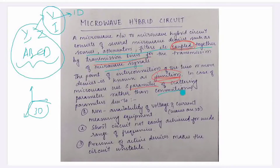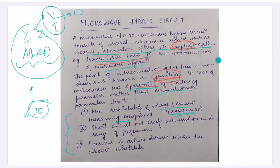So what we are doing is not using conventional parameters. Instead, we are using S-parameters, or scattering parameters. This is a famous university exam question: why do we not use conventional parameters? Because of the non-availability of voltage and current measuring equipment — waves are 3D but these sources are 1D. Also, short circuit is not easily achieved for a wide range of frequencies, and the presence of active devices makes the circuit unstable.